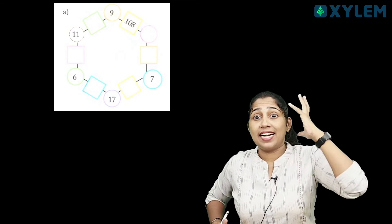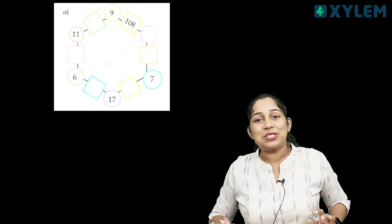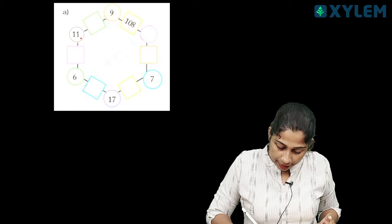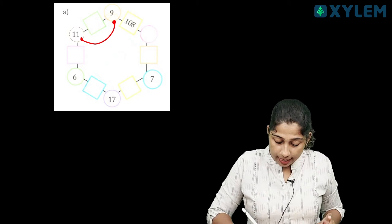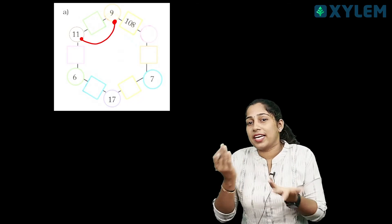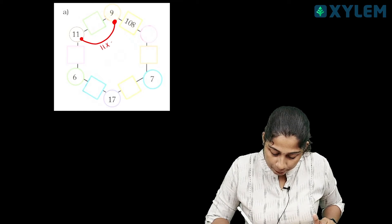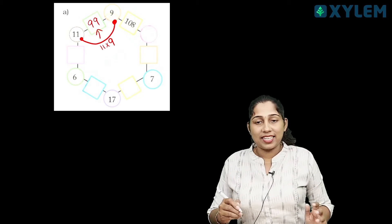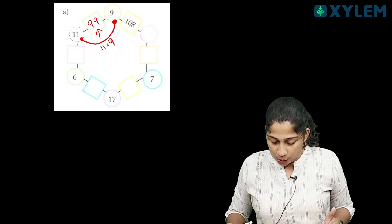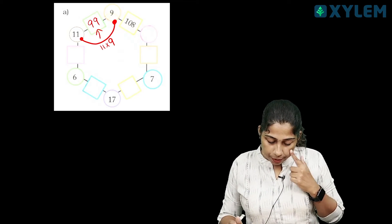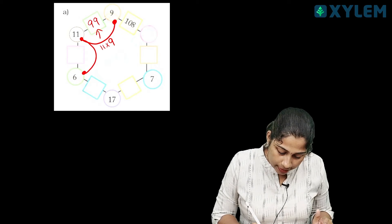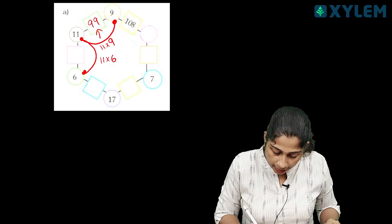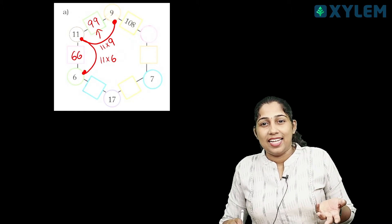What do you think about the magic hexagon? It is easy to solve. We're going to change these numbers. Here we are 11 and 9. So how is the middle number? 99 is the middle number. That means 11 into 6, and that is 66.